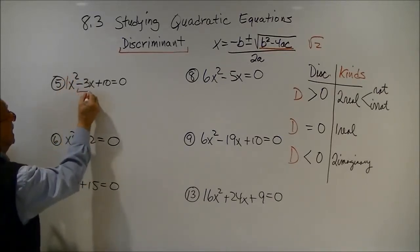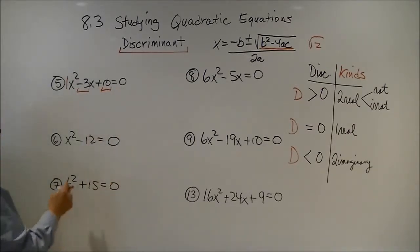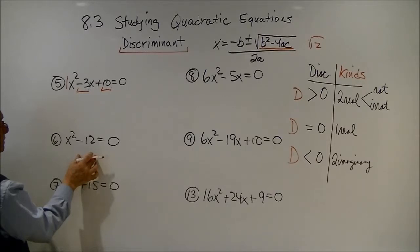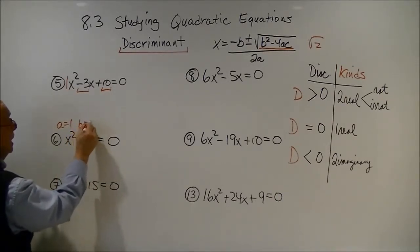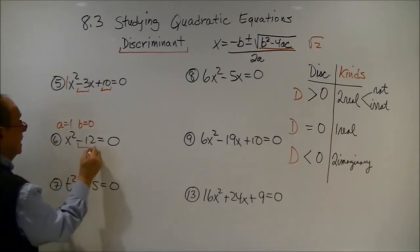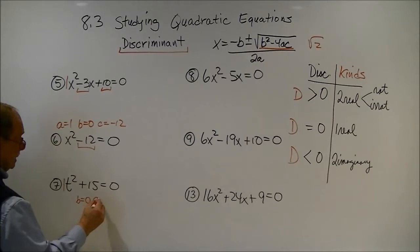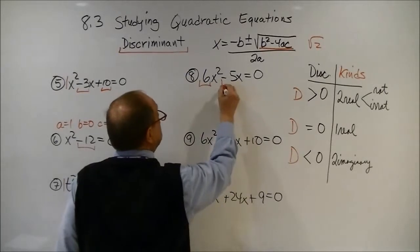Well, here, a is 1, b is a negative 3, and c is 10. Now, this is interesting here, because there is no b term here. So, a will equal 1, there is no b term, so b equals 0, and c equals a negative 12. And, similar here, a is 1, b is going to be 0, and c is 15.